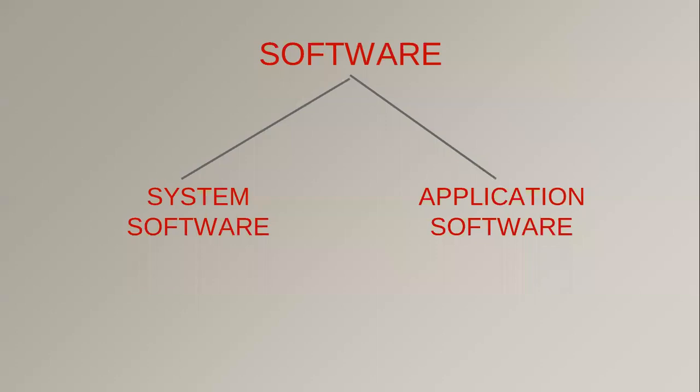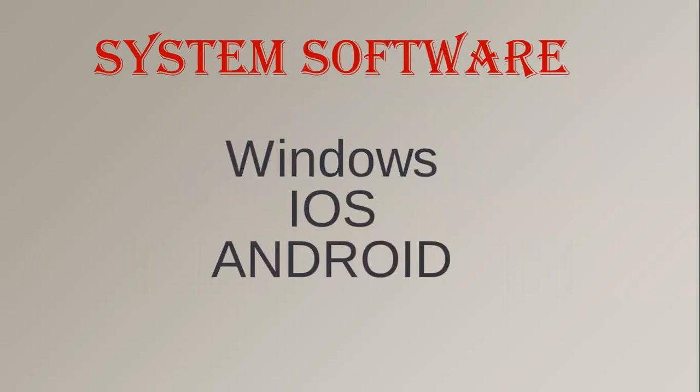Next, we learned about software, which is divided into two types. System software acts like a driver in a car — without it, a computer cannot work. Examples of system software are Windows, iOS, and Android. Remember, there can be various versions of Windows, like Windows 7, Windows XP, Windows 8, or Windows 10.